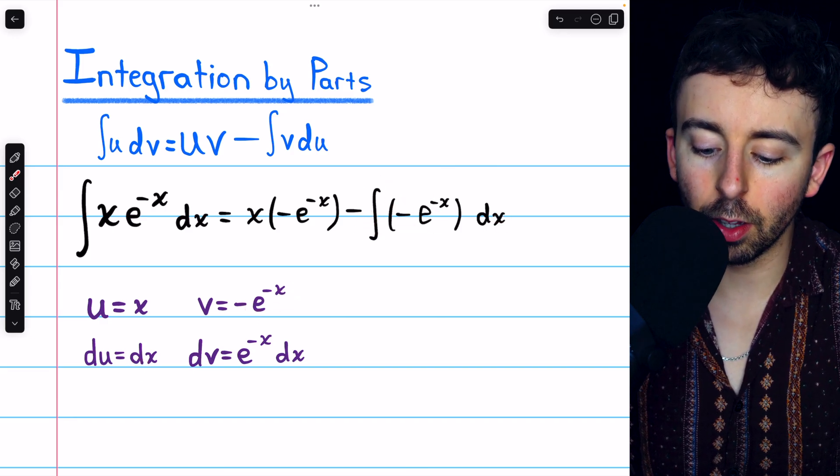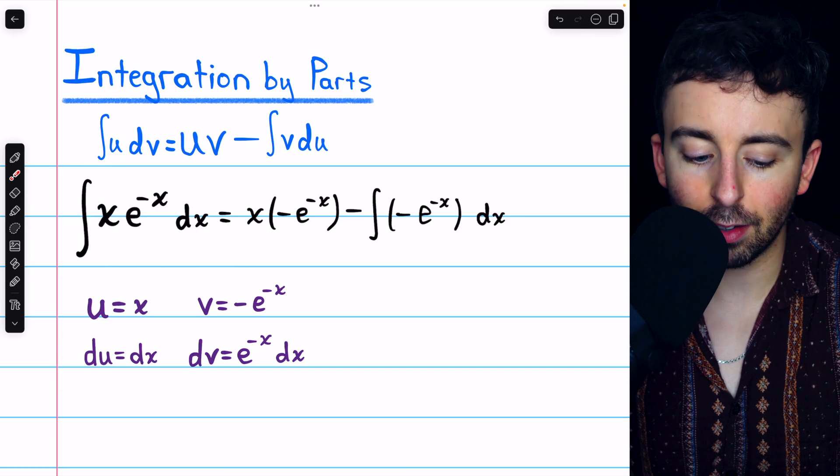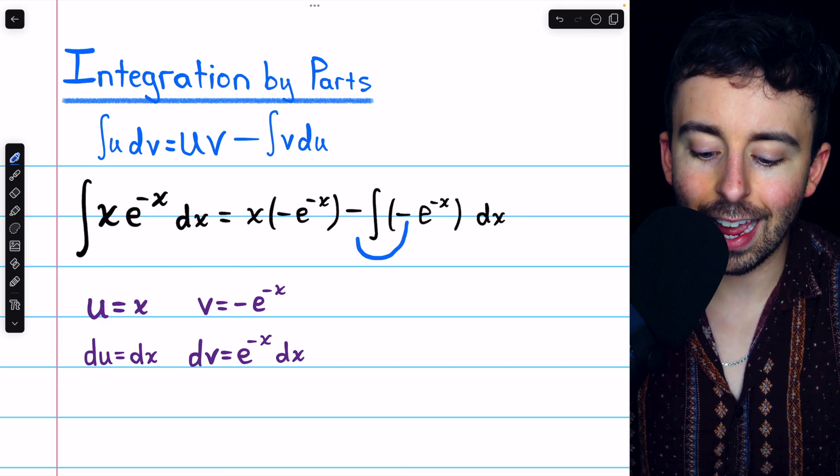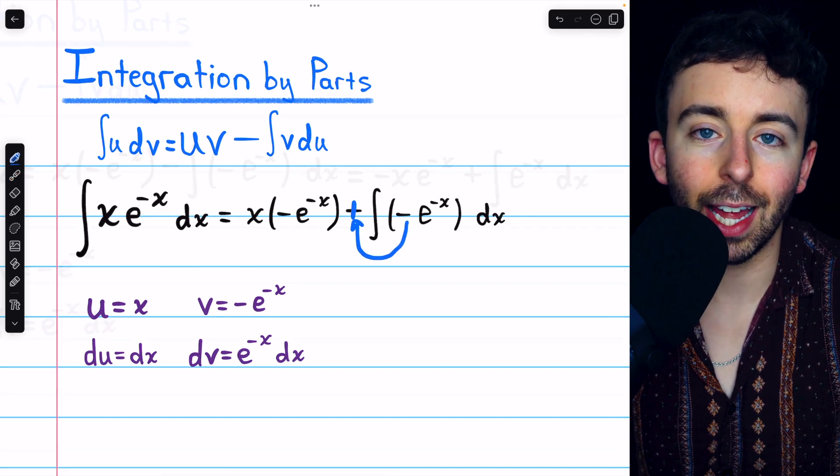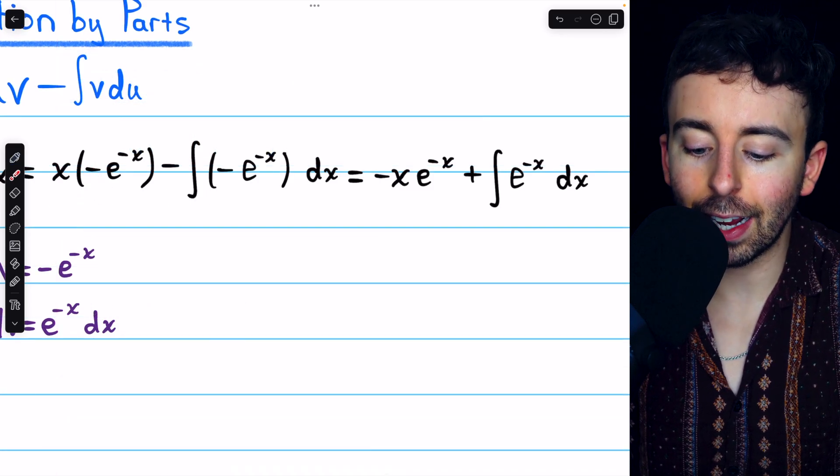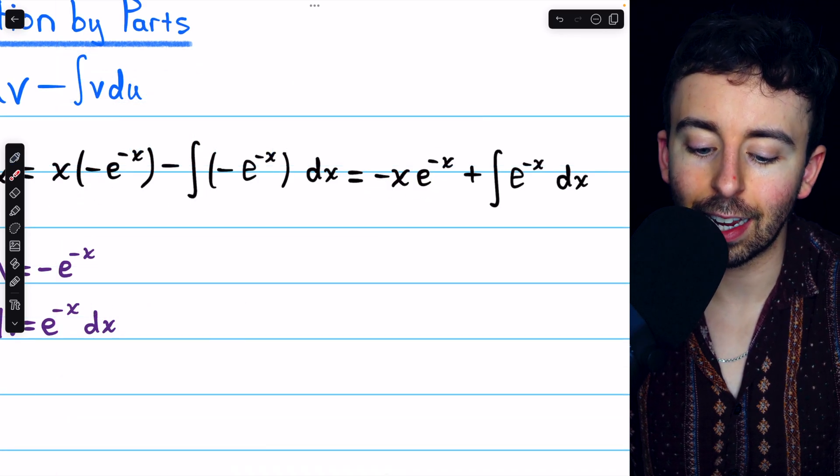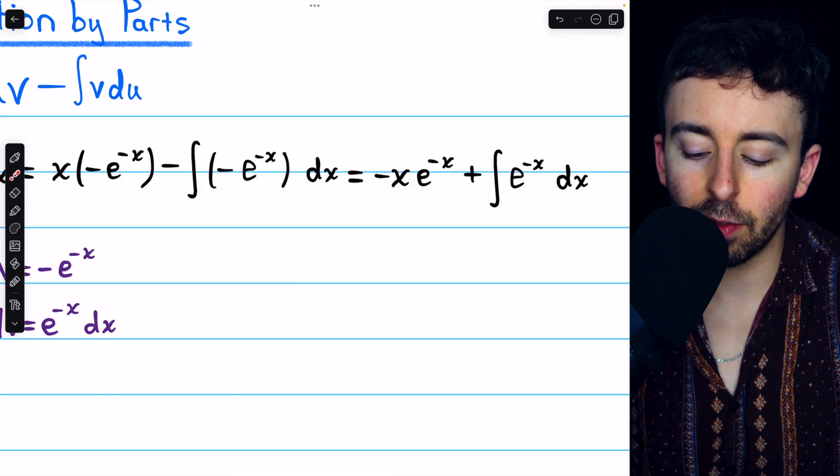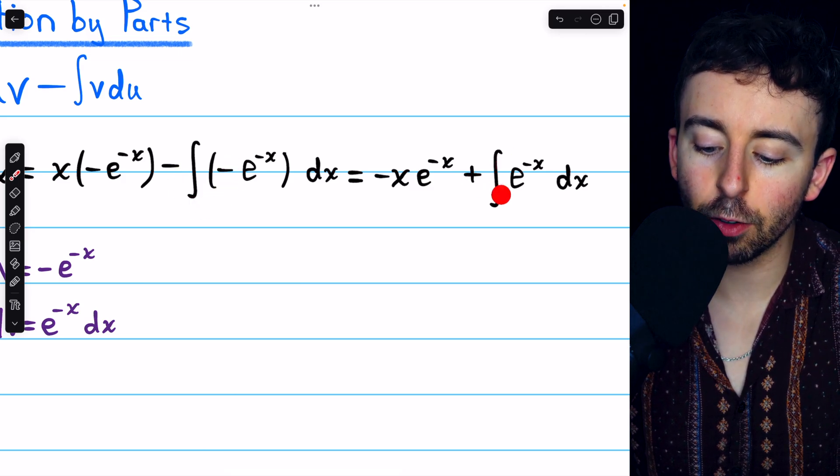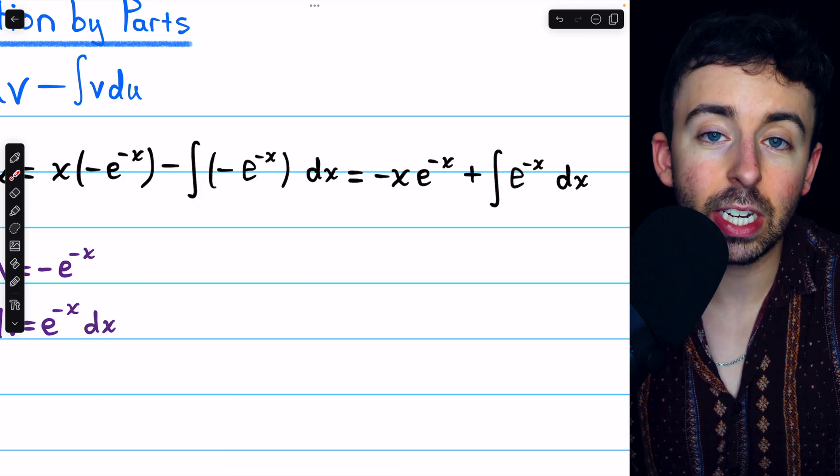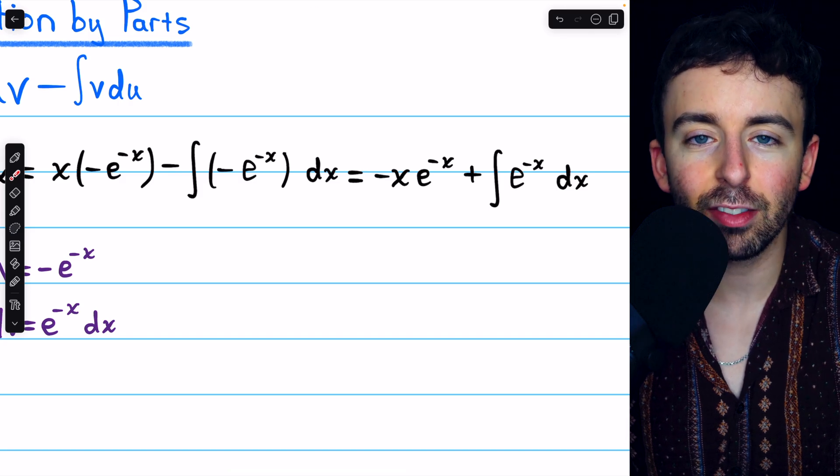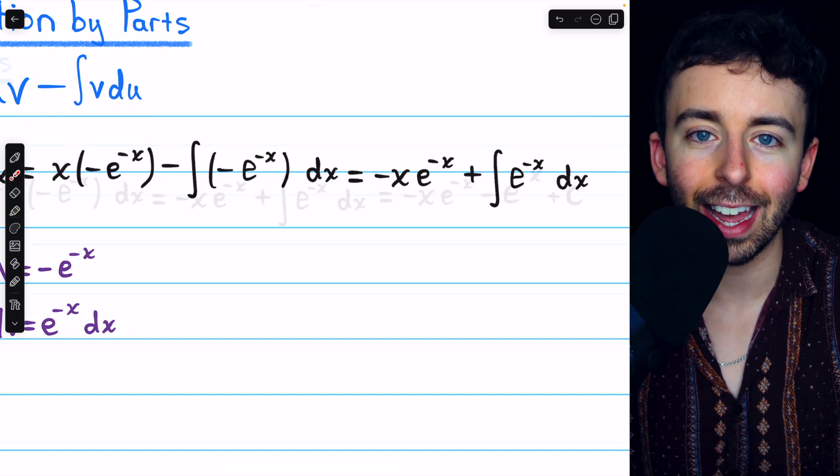Now, the integral of negative e to the negative x, that's straightforward. Let's just take that negative out, so we'll have a plus. So just doing a little bit of rewriting, we put that negative first and have negative x e to the negative x. And then we take this negative out of the integral and have plus the integral of e to the negative x. And we know the integral of e to the negative x is just negative e to the negative x.